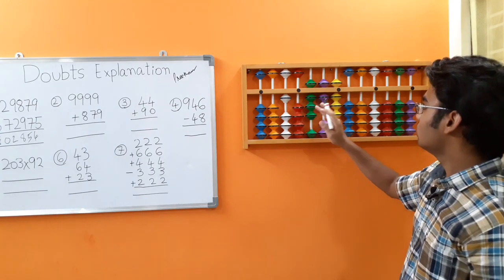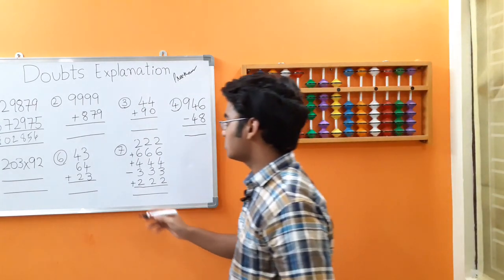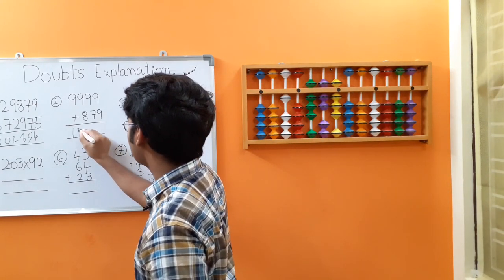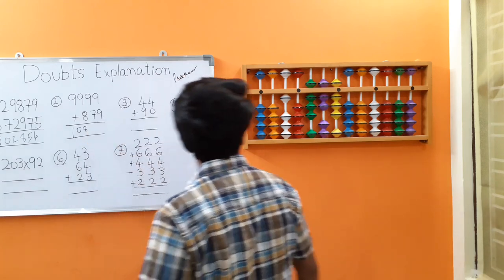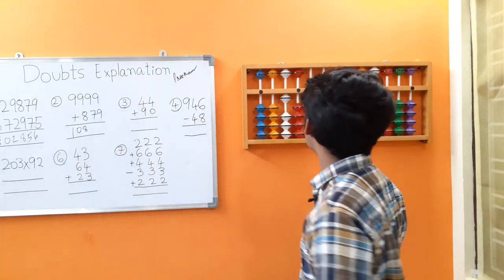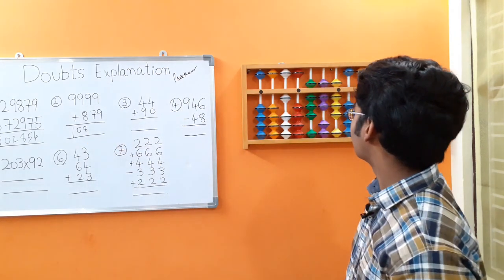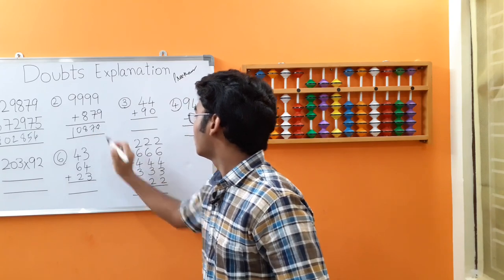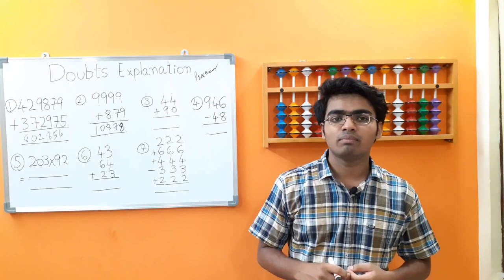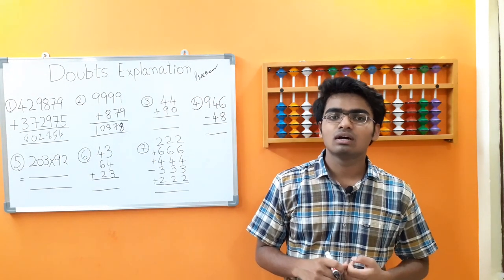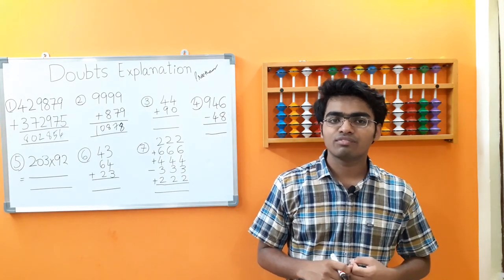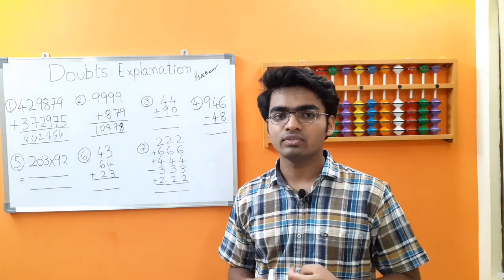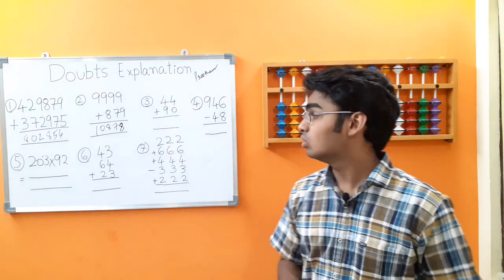The answer is 10878. This kind of sum kids generally make mistakes on, so make sure that you practice sums of this sort more often. This kind of sum involves multiple shifts, and if you are confused about this, I will make a video on it in our future Abacus 2.0 series.